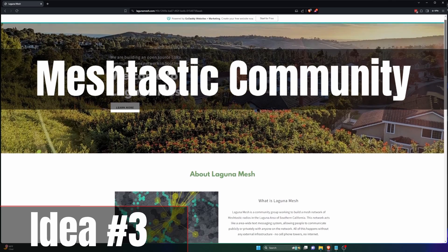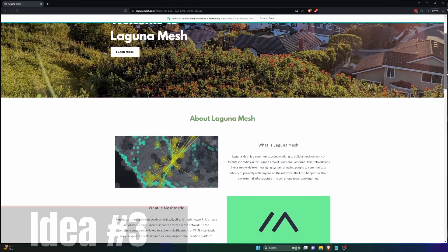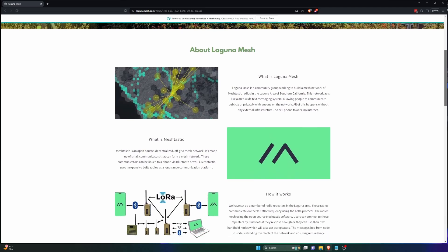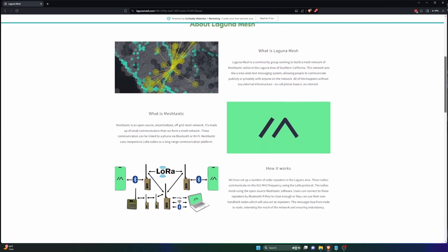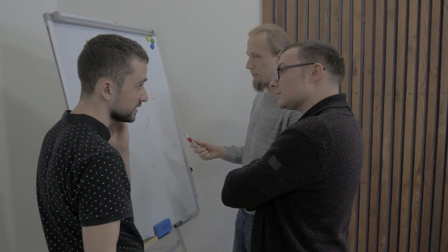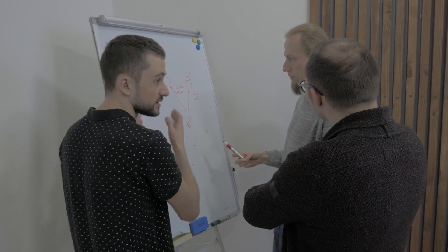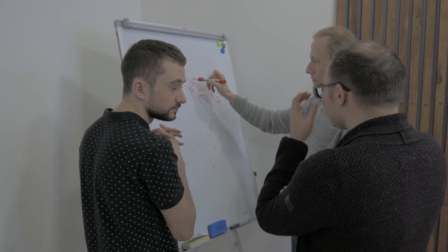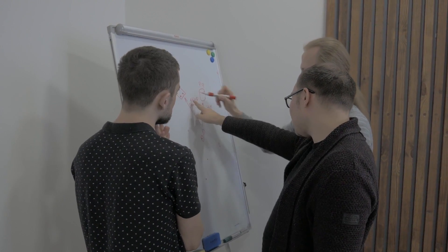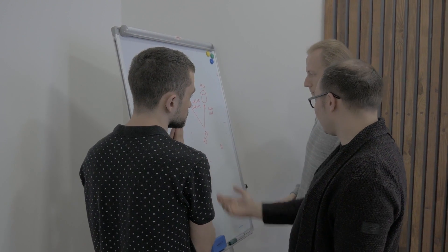The last idea is to start a Meshtastic community group. Now that you have a few more users, start a group to develop a plan to grow the network. The group can then discuss node placement for best coverage, host meetups, workshops, or even challenges. These events can spark interest, improve the network's reliability, and bring people together with a shared purpose.